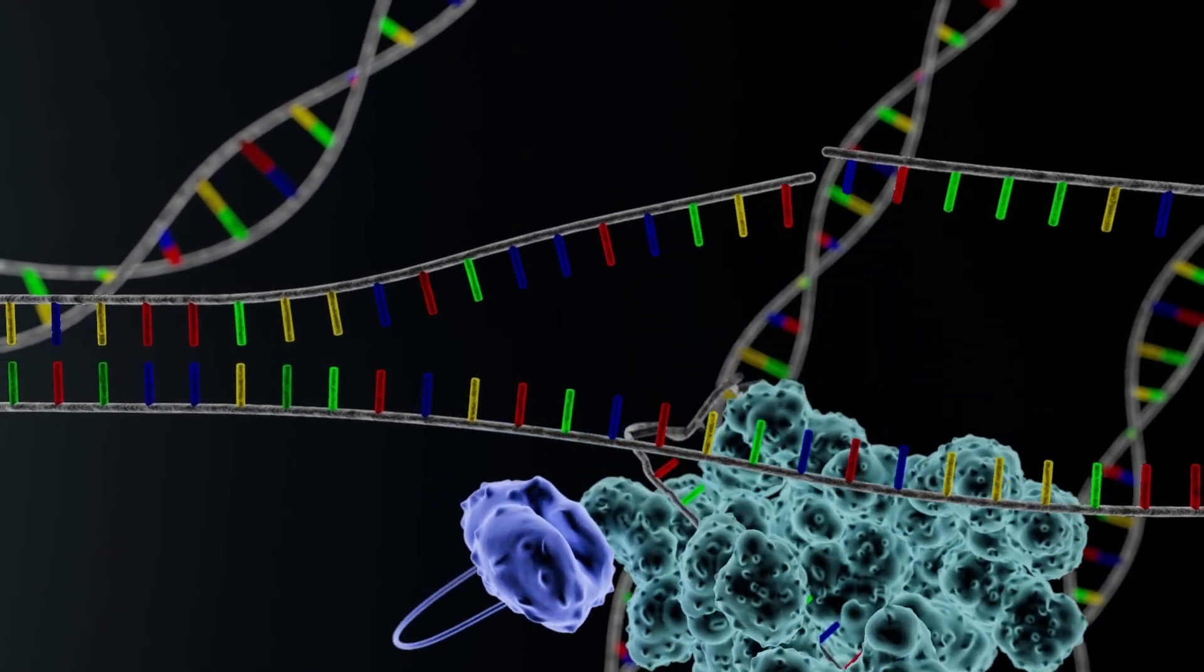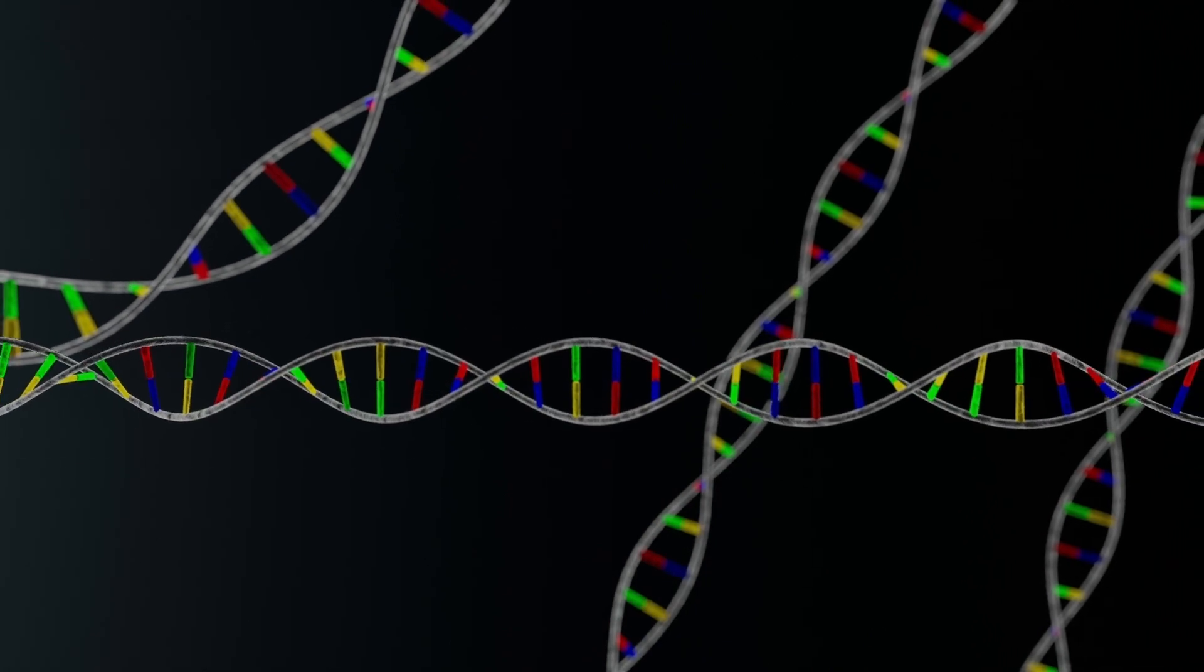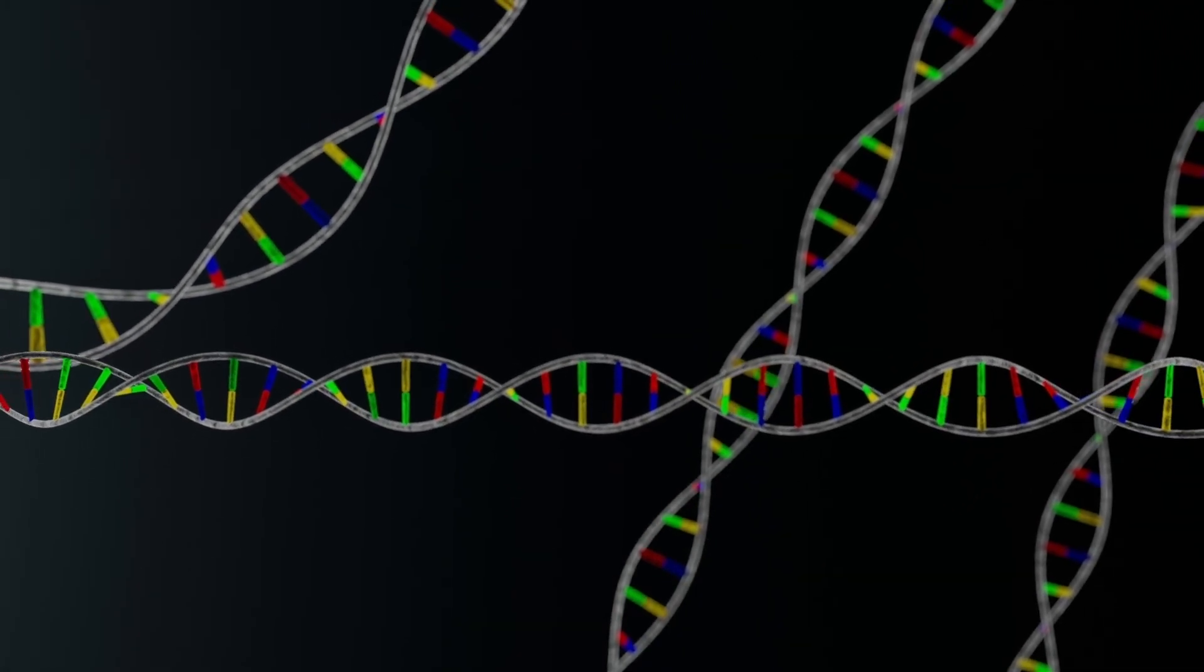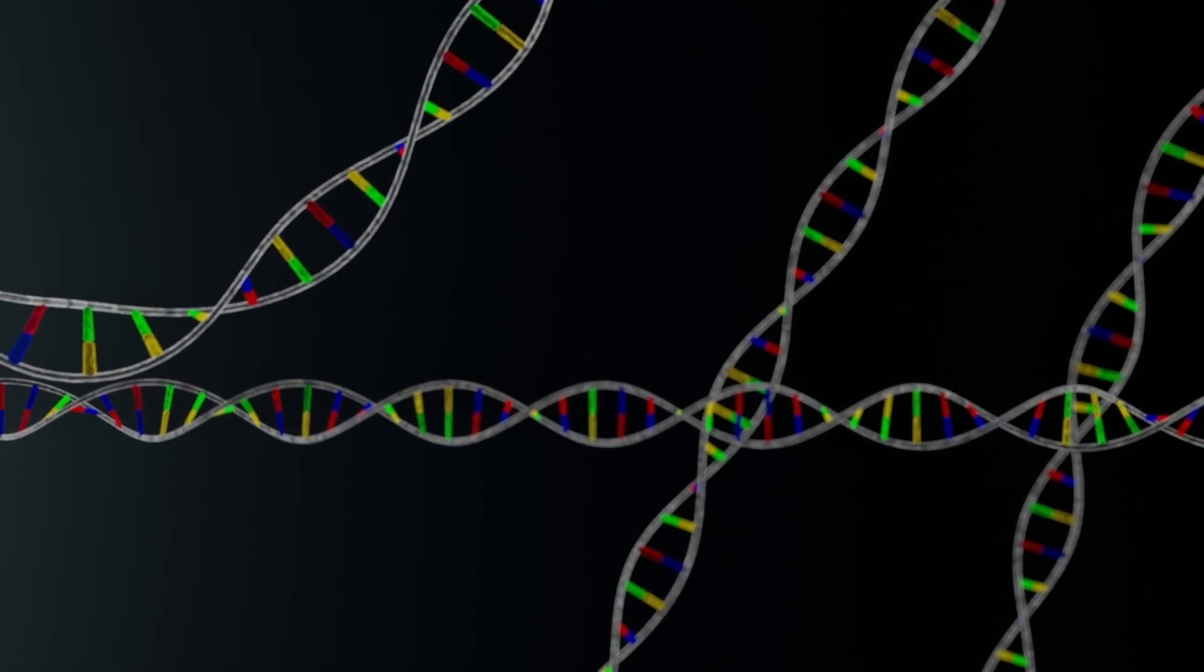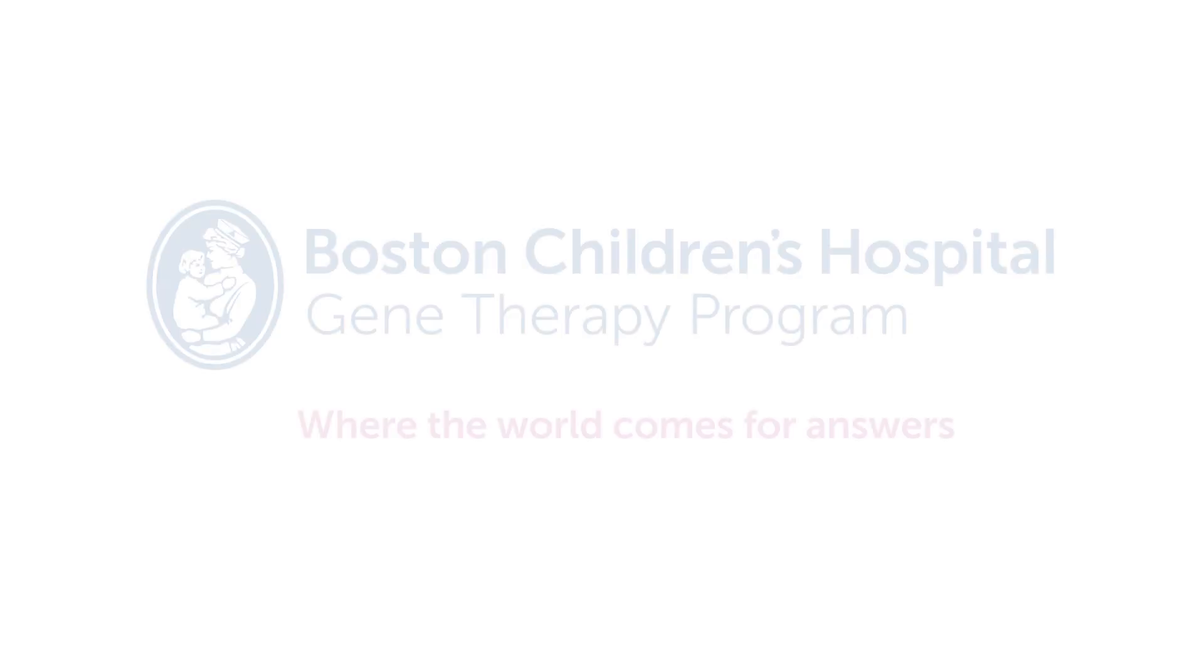Then, the cell repairs the base change, which leads to a permanent DNA change called a base edit. With corrected DNA instructions, the cell can now function normally. Diseases caused by specific mutations can potentially be cured by base editing.